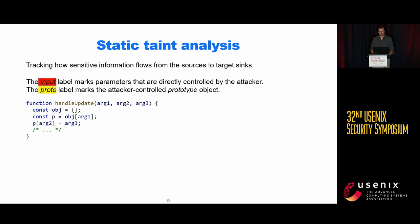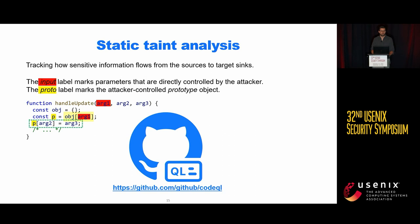To find the sinks, let's look at this example. We assume all arguments of the function are attacker-controlled and mark them with an input label. We propagate the input label, and if we have a property read with a tainted property name, we change the label to proto — meaning the attacker can potentially read the object prototype here. When the analysis detects a property assignment with a receiver that has the proto label, it reports this code fragment as a potential prototype pollution vulnerability.